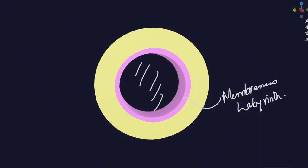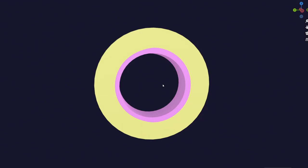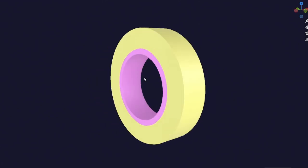Initially it was just the membranous labyrinth. Now around this membranous labyrinth it got surrounded by a thick layer of mesenchyme. This mesenchyme first forms a cartilaginous capsule, and then it forms a bony capsule. This bony capsule is called the otic capsule. This is a very important concept.